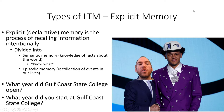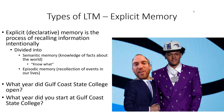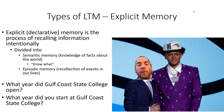Explicit — or declarative — memory is the process of recalling information intentionally. It's divided into two types: semantic memory, which is knowledge of facts about the world ('knowing what'), and episodic memory, which is recollection of events in our lives — like episodes of a soap opera. For example: 'What year did Gulf Coast State College open?' is semantic memory, while 'What year did you start at Gulf Coast State College?' is episodic memory.